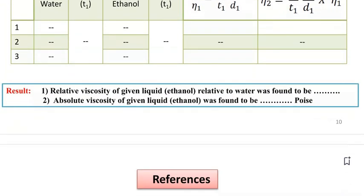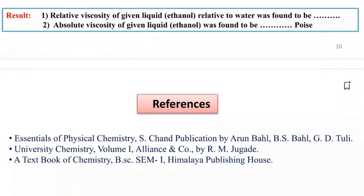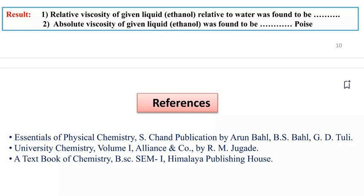Results: Relative viscosity of given liquid ethanol relative to water was found to be [value]. Absolute viscosity of given liquid ethanol was found to be [value] poise. This is the method of determination of viscosity with the help of Ostwald method.